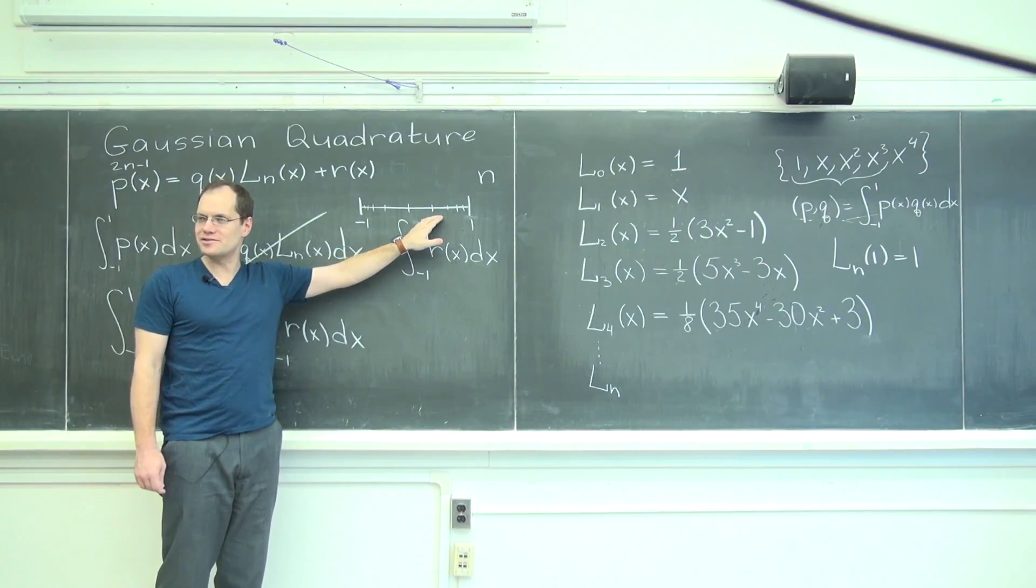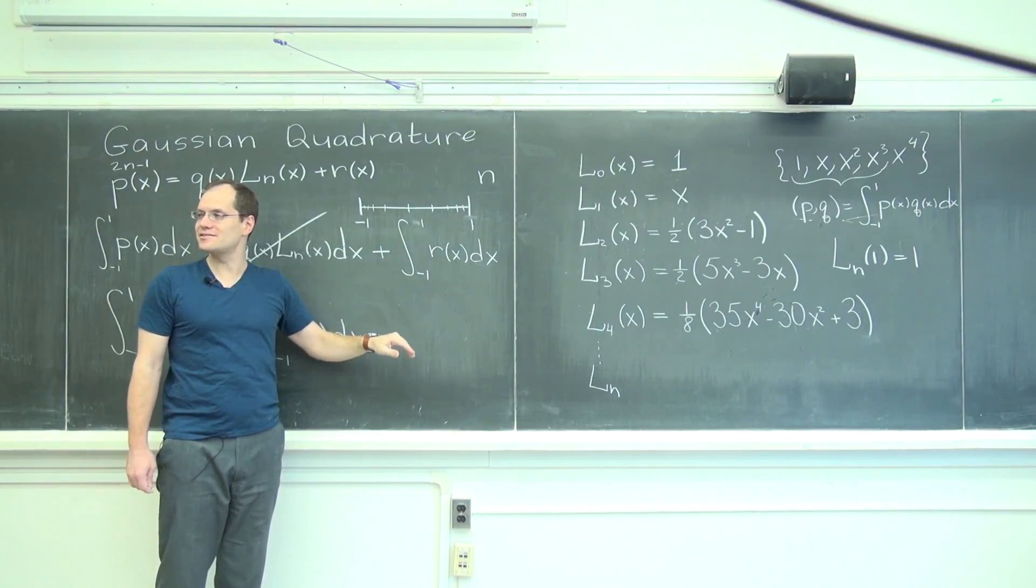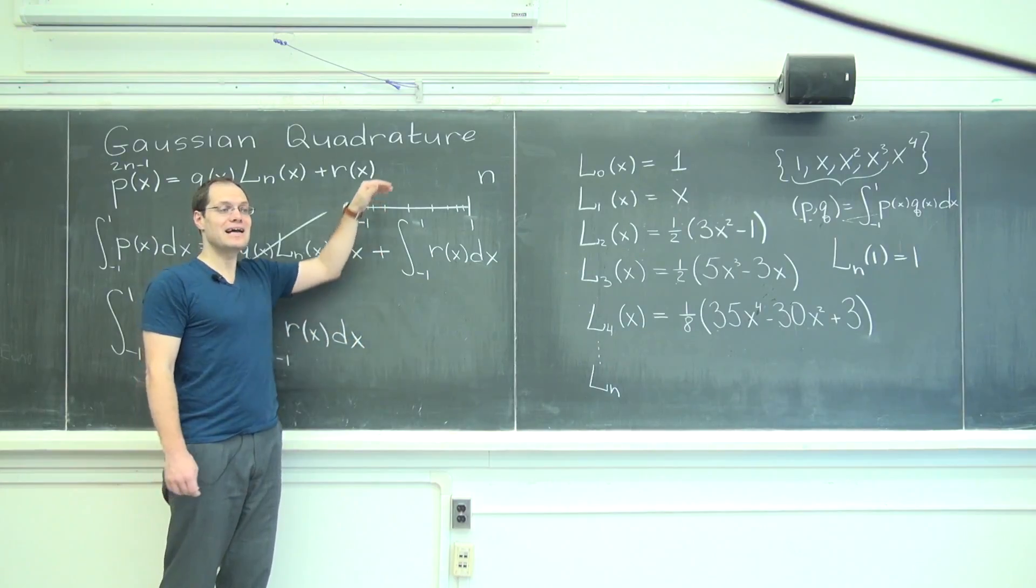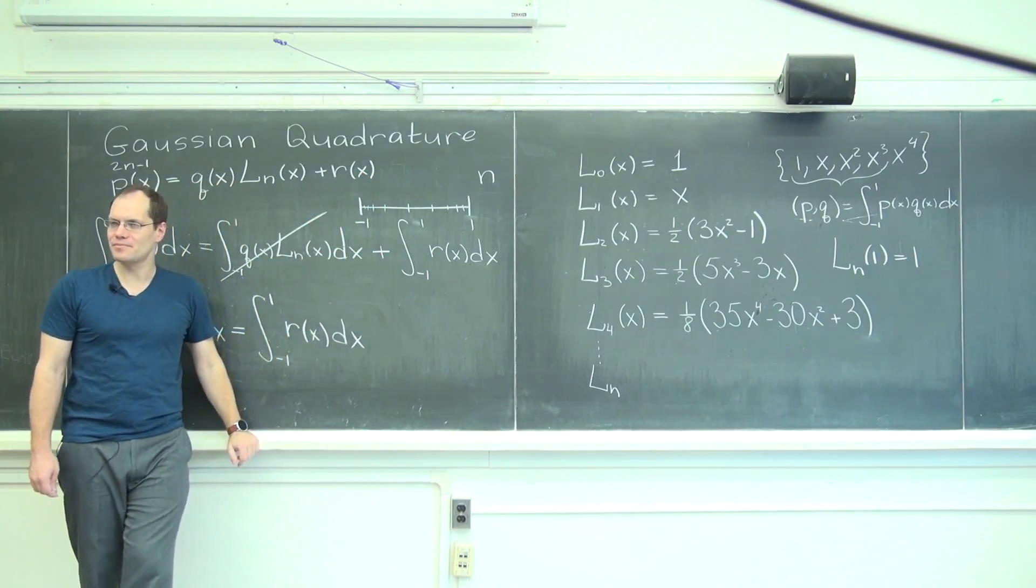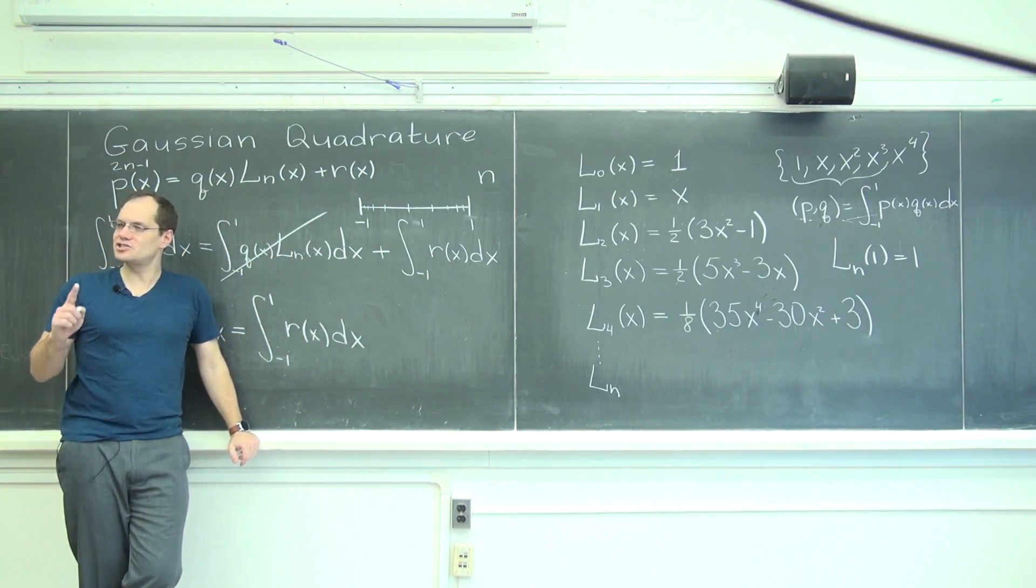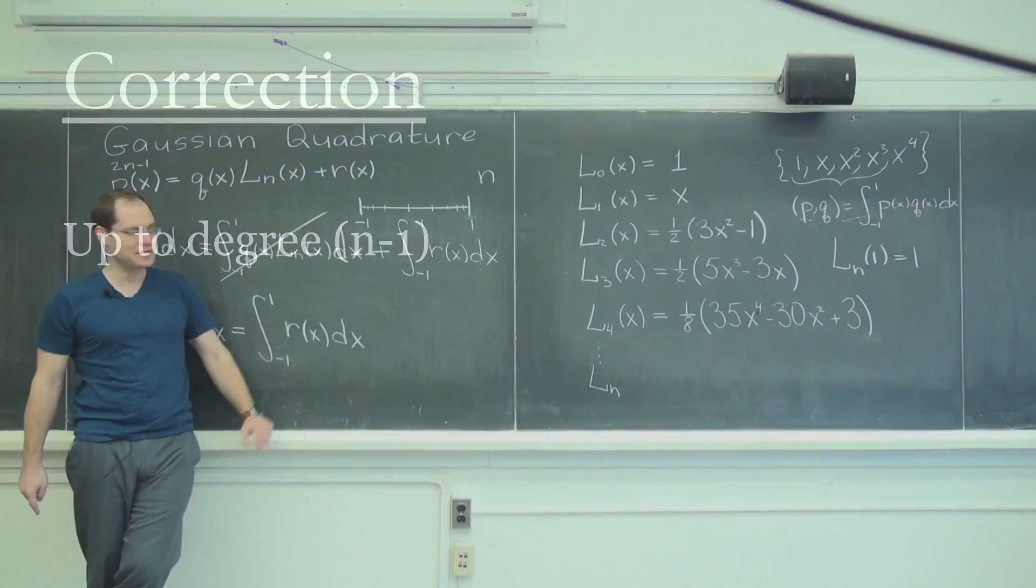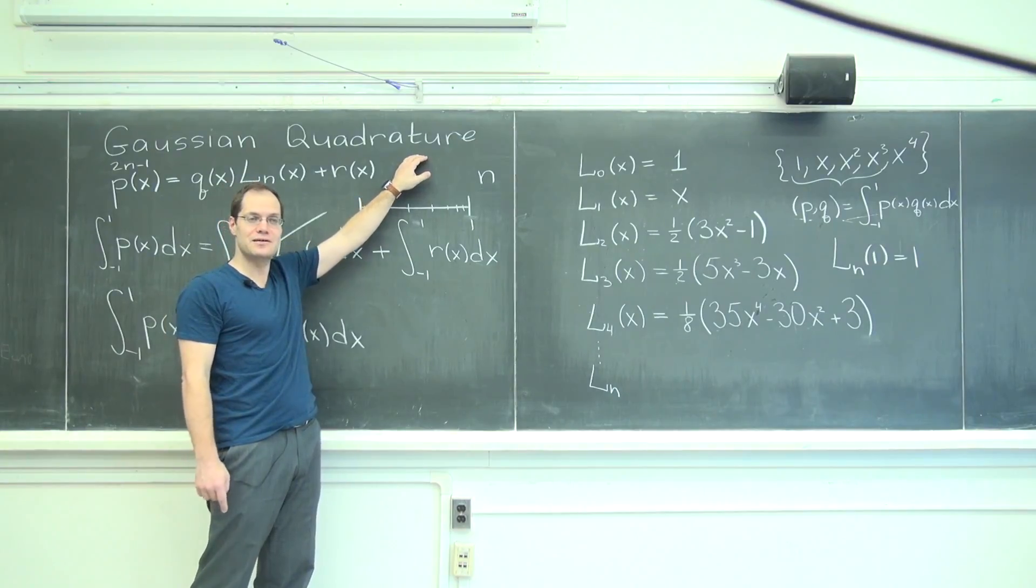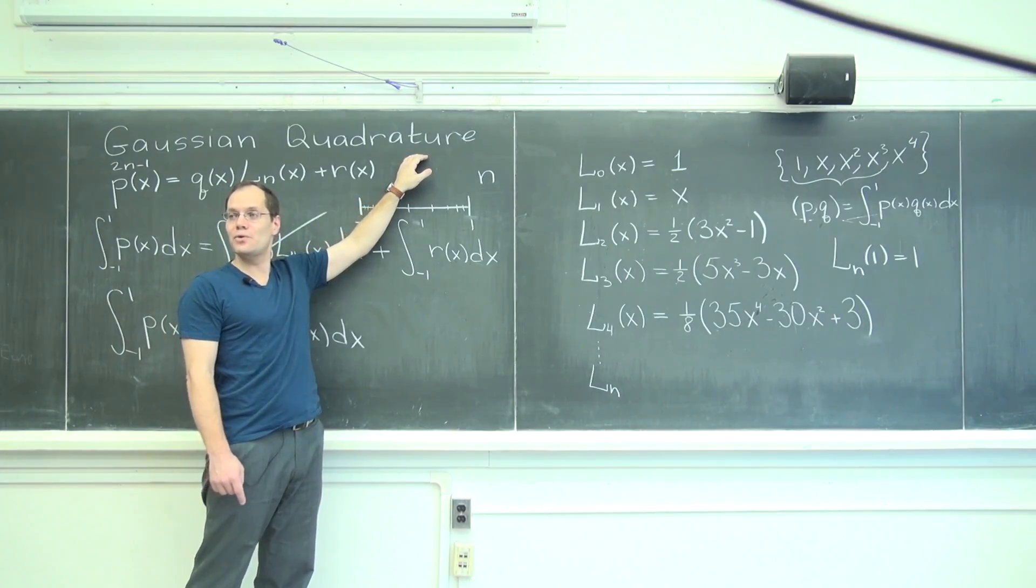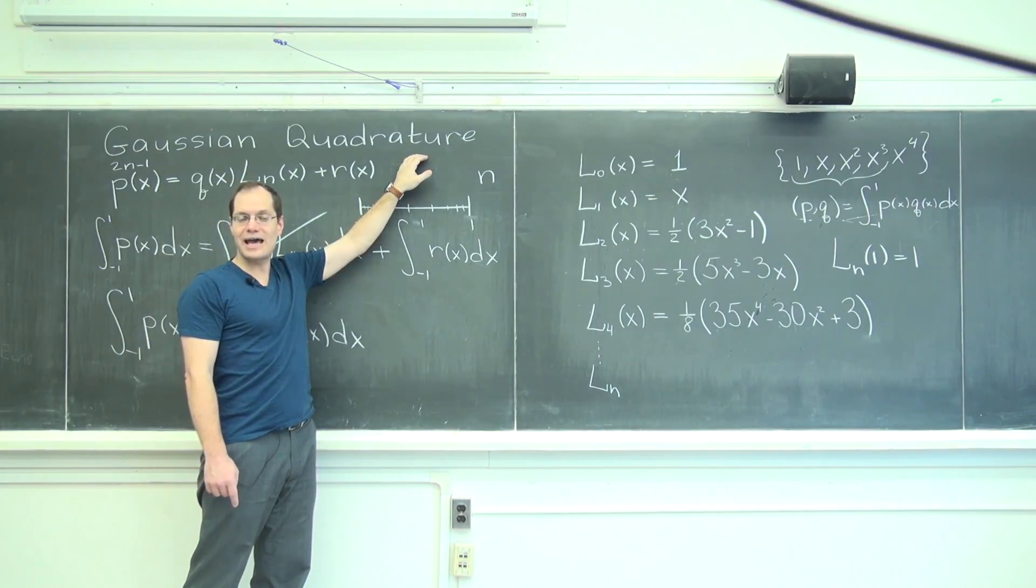And given those points, I will choose the weights that I just described in step 1. I will choose the weights such that all nth degree polynomials are evaluated exactly, right? Because I still have the degrees of freedom of the weights.